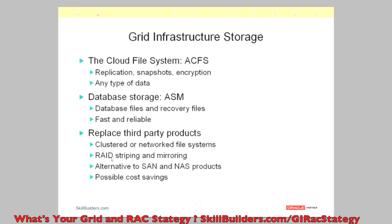ACFS can also replace hardware RAID. Many large environments will be using SAN storage with underlying striped and mirrored LUNs from a storage array. Grid Infrastructure can do the striping and mirroring for you. The advice on this is somewhat site-specific. Grid Infrastructure can replace your hardware RAID, or at most sites it will work with it. If you already have a SAN capable of striping and mirroring, we layer Grid Infrastructure on top, and that double layer of striping can give you fantastic performance. It can also become an alternative to SAN and network attached storage, replacing iSCSI or NFS sharing mechanisms, and it may provide cost savings, though that would require investigation.